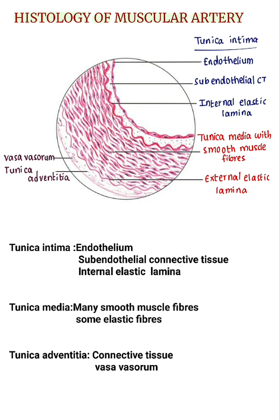Tunica intima is the innermost layer. It consists of endothelium, subendothelial connective tissue, and internal elastic lamina. The endothelium is simple squamous epithelium. The subendothelial connective tissue is very less or may be absent.